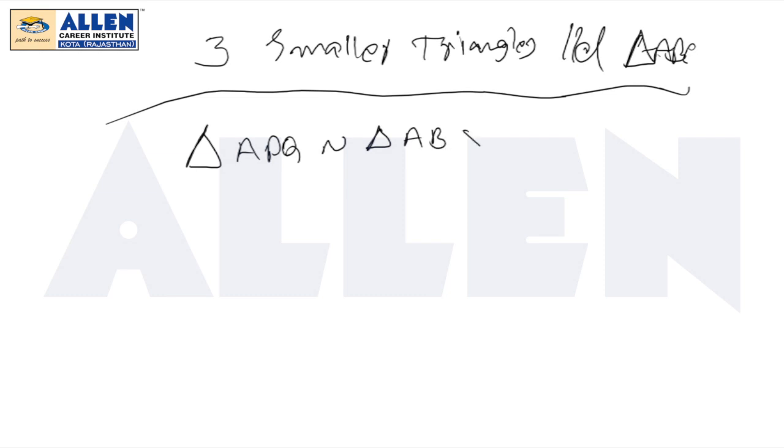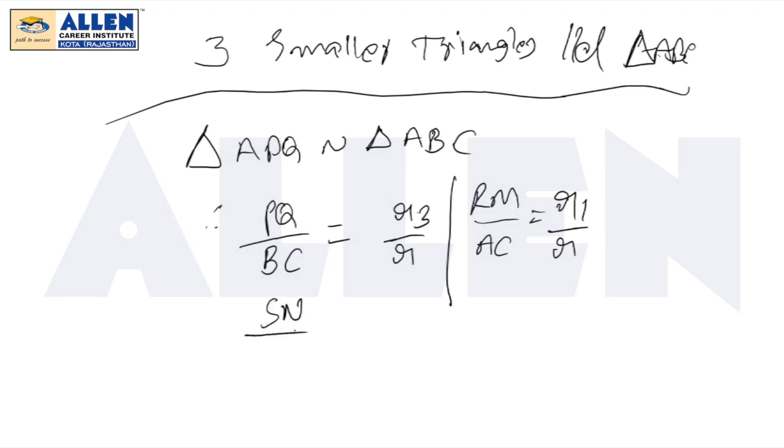Triangle APQ is similar to triangle ABC. This means we can write the ratio: PQ by BC equals R3 by R. Similarly, RM by AC equals R1 by R, and SN by AB equals R2 by R.